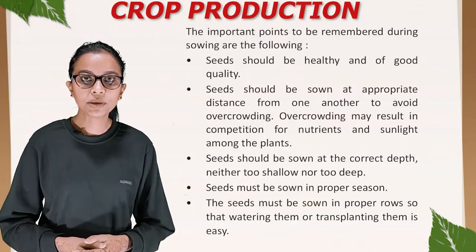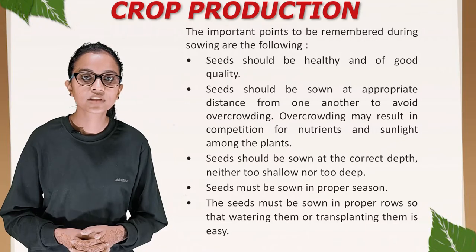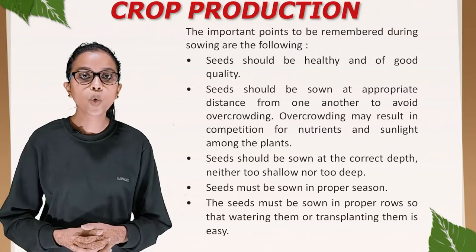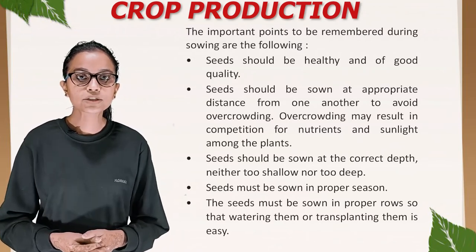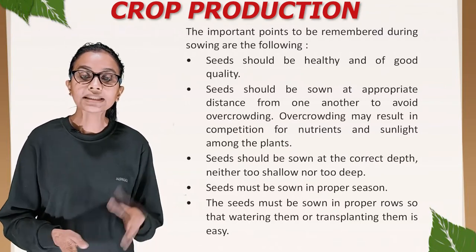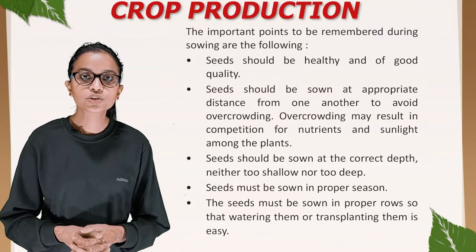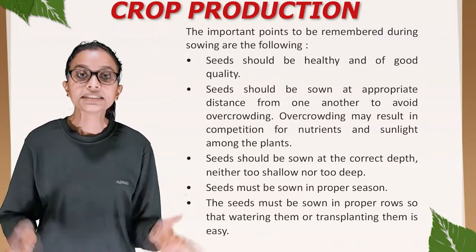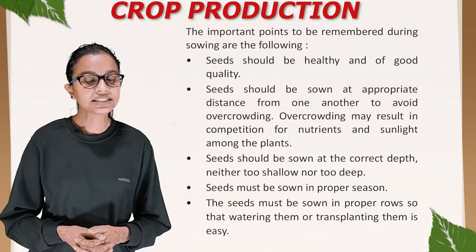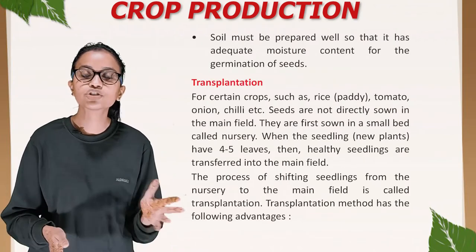Important points to remember during sowing: seeds should be healthy and of good quality; seeds should be sown at appropriate distances to avoid overcrowding, which may result in competition for nutrients and sunlight; seeds should be sown at the correct depth — neither too shallow nor too deep; seeds must be sown in the proper season and in proper rows so that watering or transplanting is easy; soil must be well-prepared with adequate moisture for germination.